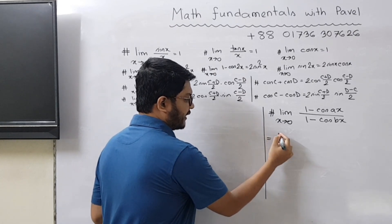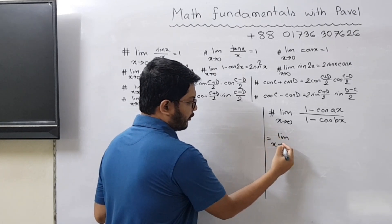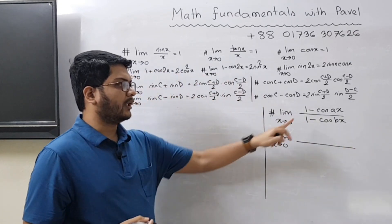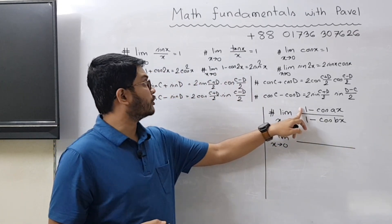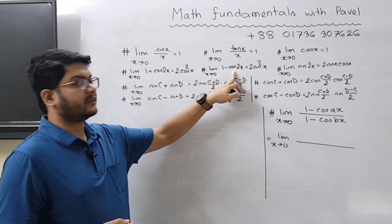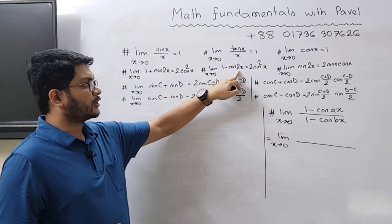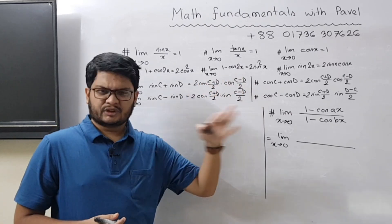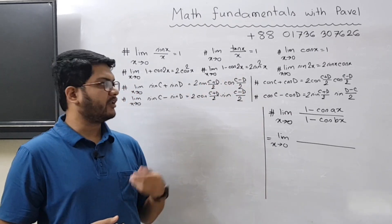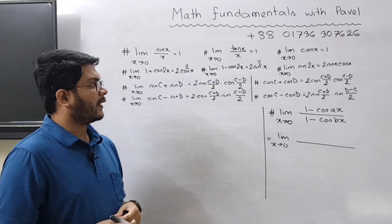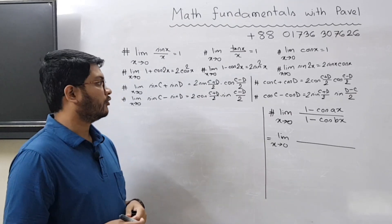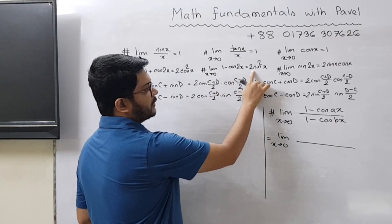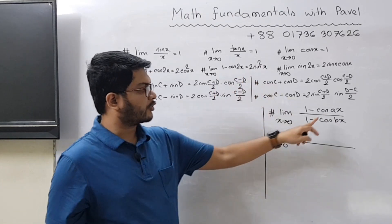The first thing that we are going to do here is that we will apply the formula 1 minus cos 2θ. So 1 minus cos 2x, we know this formula, we have solved lots of similar problems in the previous lectures. So I hope you already know this formula.